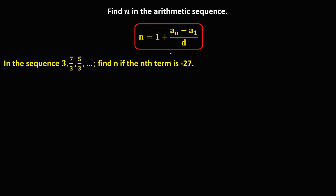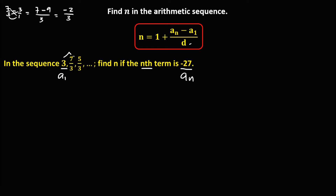For this next given, this one is the first term, that's a sub 1, which is 3. And negative 27 is the last term, so a sub n. For the common difference, from 3 to 7/3: we have 7/3 minus 3. Using cross multiplication, 7 times 1 is 7, minus 3 times 3 is 9, over 3 times 1, that's 3. So therefore, d is negative 2 over 3. Confirmed: from 7/3 to 5/3, so 5/3 minus 7/3 gives 5 minus 7, which is negative 2 over 3.